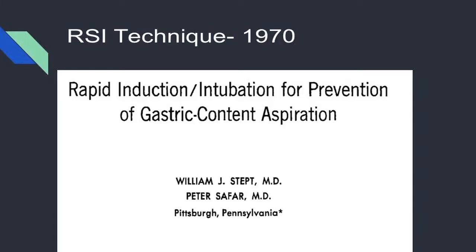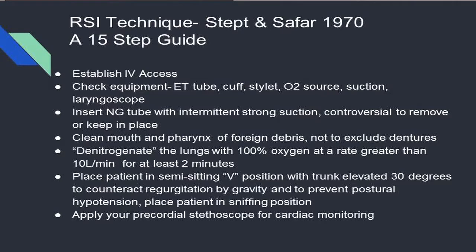The first time RSI was formally described was back in 1970 by Stept and Safar at UPMC in Pittsburgh. There's a handy 15-step guide we'll breeze through quickly. Get IV access, check your equipment, put in an NG tube — it's controversial whether to remove it before induction — clean the mouth and pharynx, remember to get their dentures out, denitrogenate the lungs for at least a couple minutes, and put the patient in a semi-sitting position with about 30 degrees trunk elevation, which you don't see that often anymore. Apply a precordial stethoscope for cardiac monitoring, which we also don't do very often anymore.